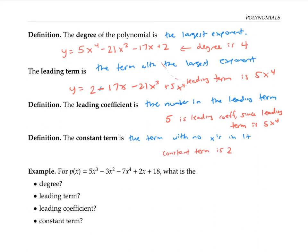Please pause the video for a moment and take a look at this next example polynomial. Figure out the degree, the leading term, the leading coefficient, and the constant term. The degree is again four, since that's the highest power. The leading term is negative seven x to the fourth, the leading coefficient is negative seven, and the constant term is 18.